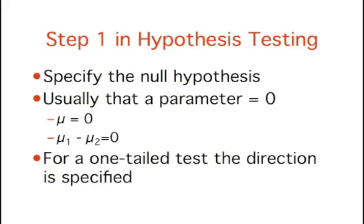For a one-tailed test, the null hypothesis is either that a parameter is greater than or equal to 0, or that a parameter is less than or equal to 0. If the prediction is that mu1 is larger than mu2, then the null hypothesis, the reverse of the prediction, is mu2 minus mu1 is greater than or equal to 0. This is equivalent to mu1 is less than or equal to mu2.